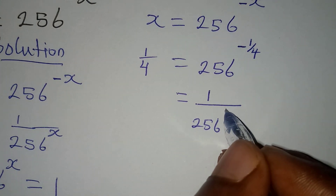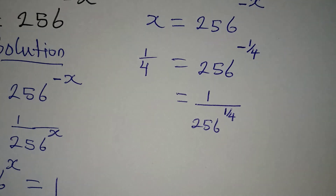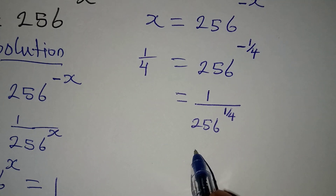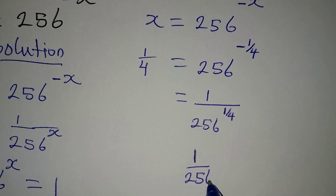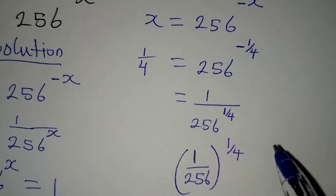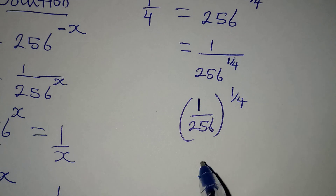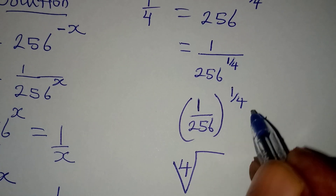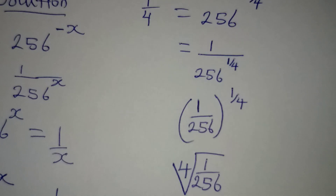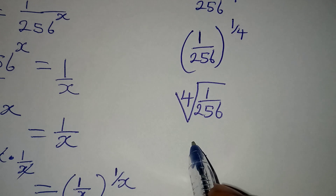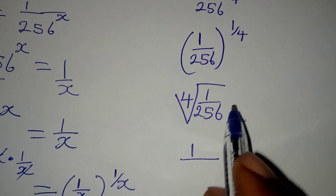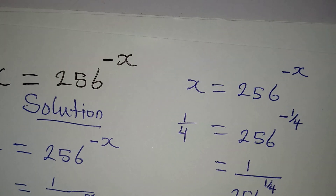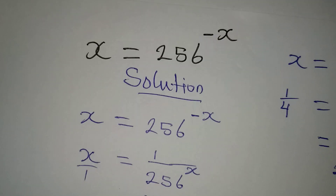Any number to the power of 1/4 means we take the fourth root. So this is the fourth root of 1 over 256. The fourth root of 1 is 1, and the fourth root of 256 is 4. This gives us 1/4, which matches the left-hand side. So x = 1/4 is confirmed correct. Thank you for watching, God bless.